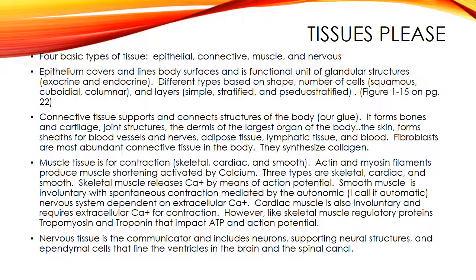Body cells are organized into four basic tissue types: epithelial, connective, muscle, and nervous. Epithelial tissue covers and lines the body surfaces and forms the functional components of glandular structures. Epithelial cells are classified as squamous, cuboidal, and columnar, according to the shape of the cells and the number of layers present. The cells in epithelial tissue are held together by intercellular junctions.